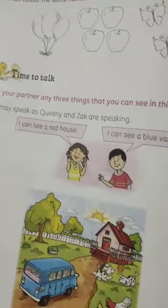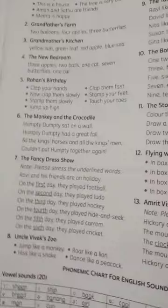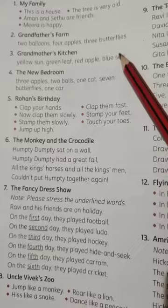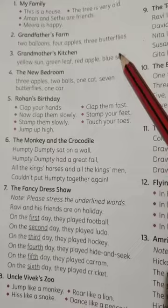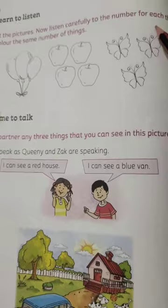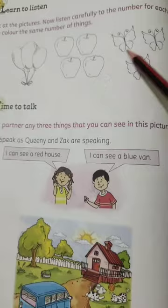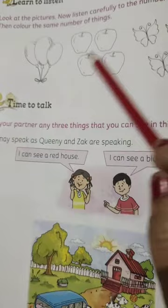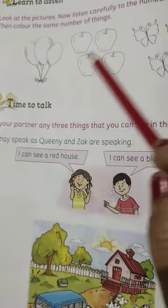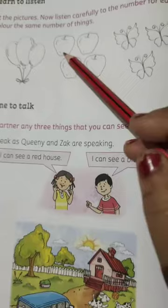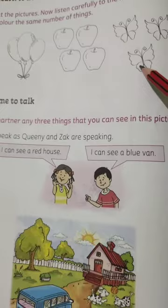Then turn the page — Learn to Listen. Yeh learn to listen aapke books mein last page par chapter-related hota hai. Grandfather's Farm section mein likha hua hai: two balloons, four apples, three butterflies. Aapko bola gaya hai: look at the pictures, listen carefully to the number of each thing. Phir color the same number of things — jaise two balloons ko color karna hai, four apples ko color karna hai, aur three butterflies ko color karna hai.